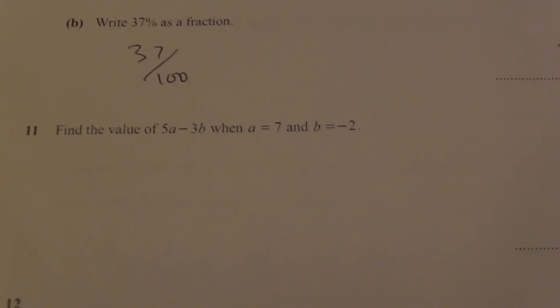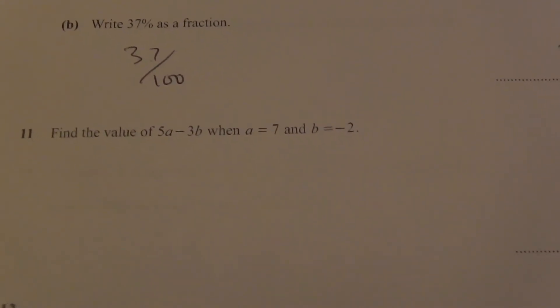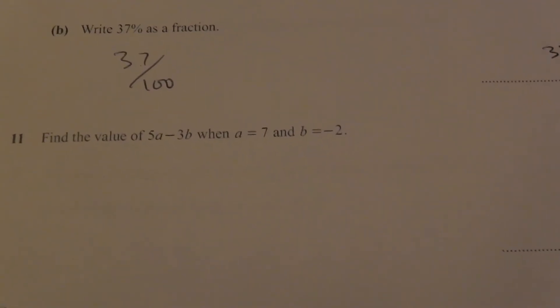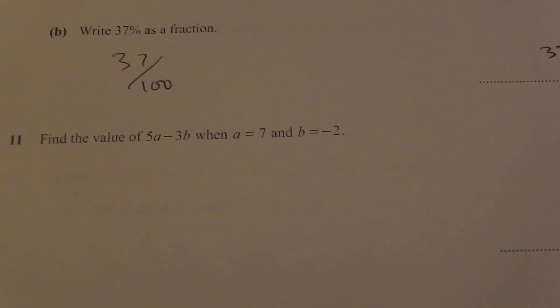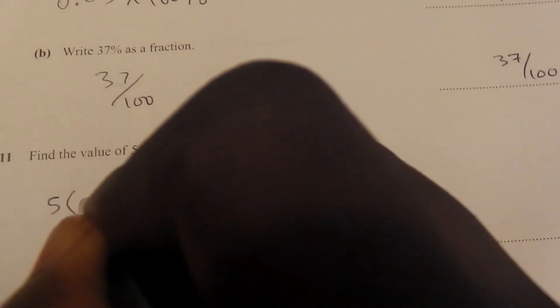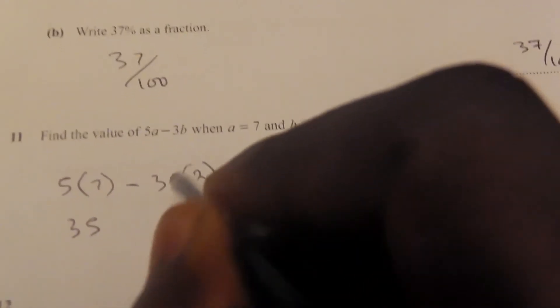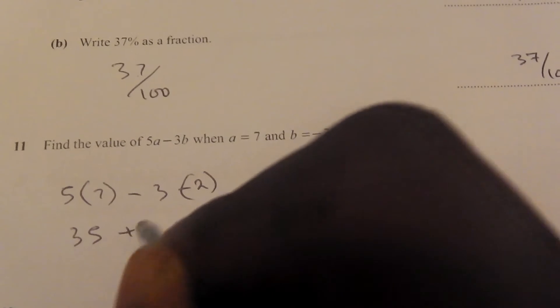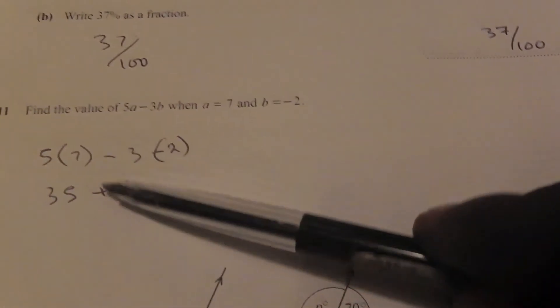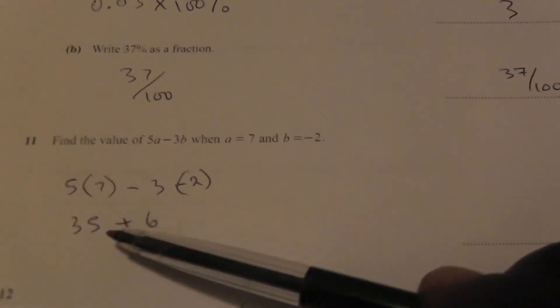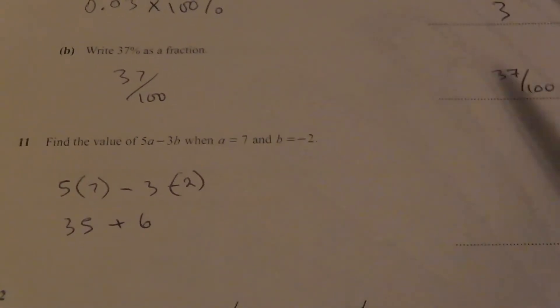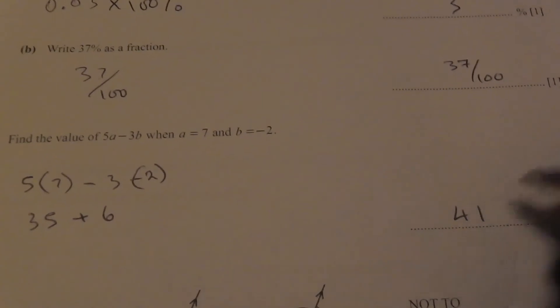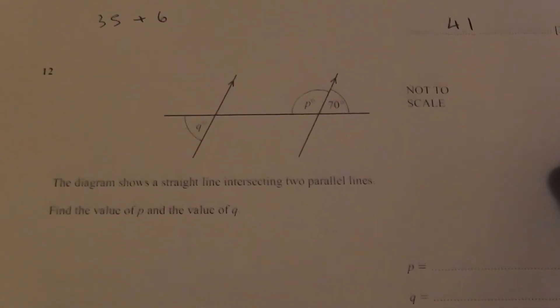The next question says: find the value of 5a minus 3b when a equals 7 and b equals negative 2. Substitute the values: 5 times 7 minus 3 times negative 2. That gives 35 minus (−6), which is 35 plus 6 — because multiplying two negatives gives a positive — equalling 41.